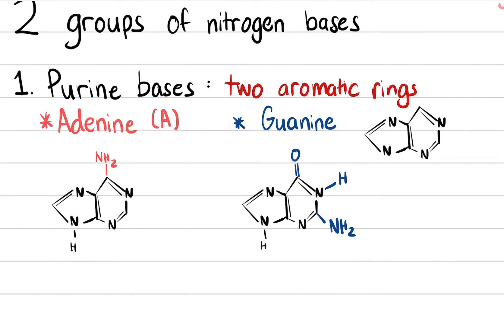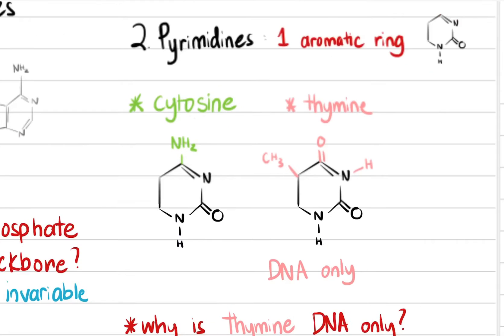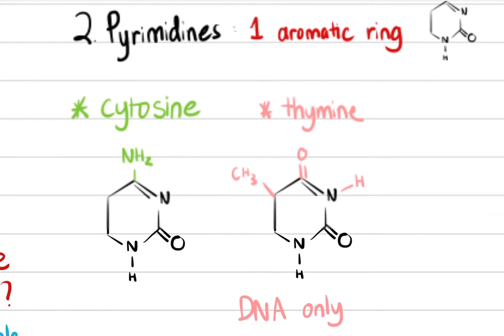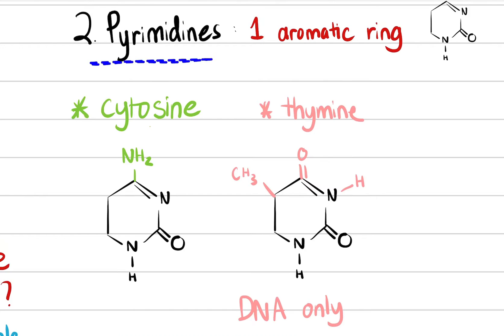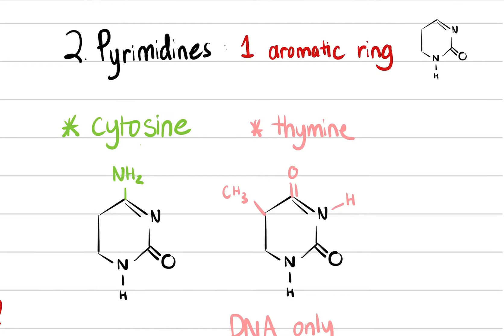If you're an IB or AP student, this is very helpful for understanding the structure. If you're an MCAT student, you just have to memorize this eventually — it kicks in eventually. The second group is the pyrimidine. The pyrimidine is characterized by having one aromatic ring.